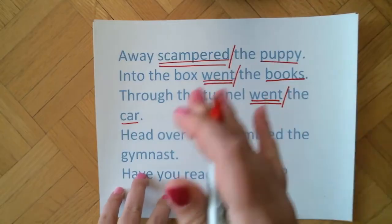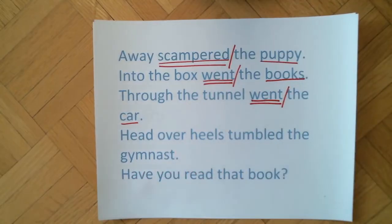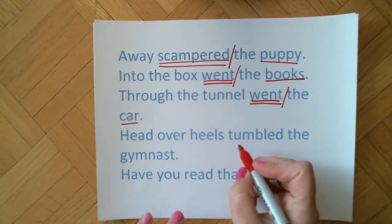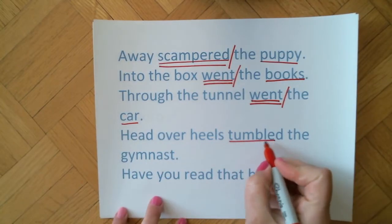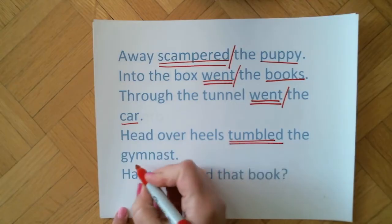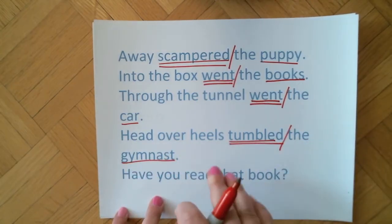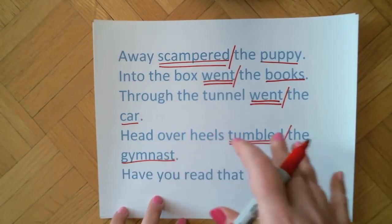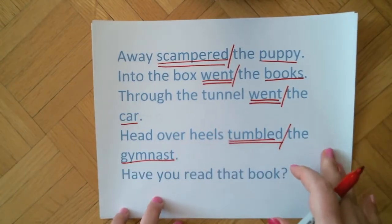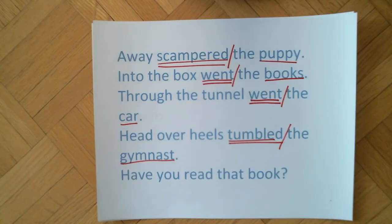You can see a pattern forming here. 'Head over heels tumbled the gymnast.' The predicate must come in front of the subject in order to have an inverted order sentence.